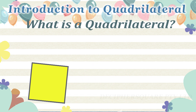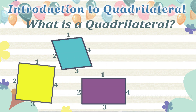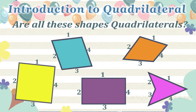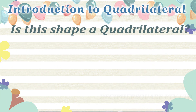What is a quadrilateral? A quadrilateral is a four-sided polygon. A polygon is a flat, two-dimensional closed shape with straight sides. So a quadrilateral is a two-dimensional closed shape with four straight sides. Are these shapes quadrilaterals? Yes, all these shapes are quadrilaterals, as they are two-dimensional closed shapes with four straight sides.